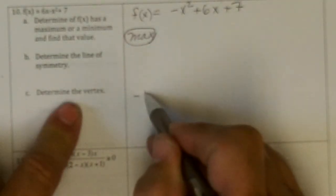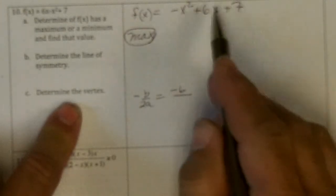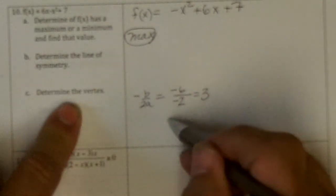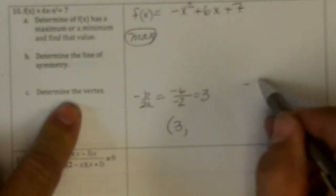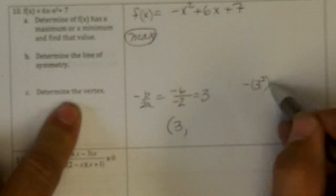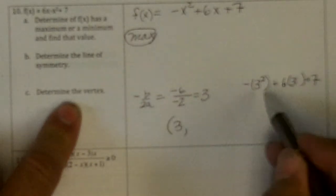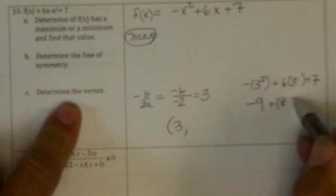So to do the vertex, it's minus b over 2a when we have it in this form. So that's going to be negative 6 over negative 2, which is 3. And if I plug 3 back in, I get negative of 3 squared plus 6 times 3 plus 7. So that's negative 9 plus 18 plus 7. That's 9 plus 7, 16.